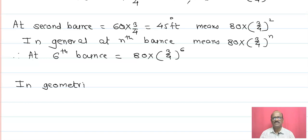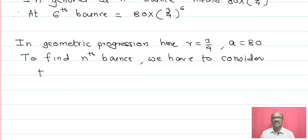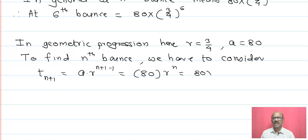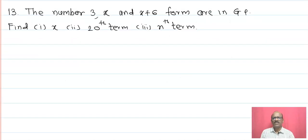In general, it is written as 80 into (3/4) raised to n. In geometric progression, r equals 3/4 and a equals 80. To find the nth bounce, we consider t(n+1) equals a into r raise to n+1 minus 1, that is 80 into r raise to n, therefore 80 into (3/4) raised to n. For the sixth bounce we take t7, therefore 80 into (3/4) raised to 6.